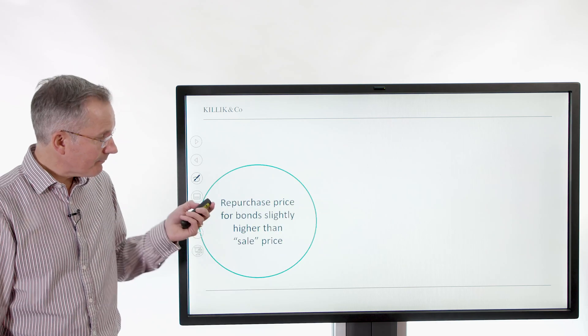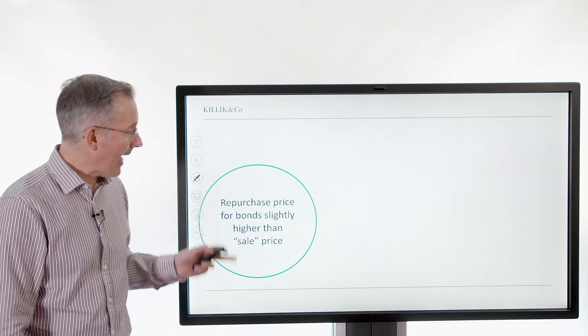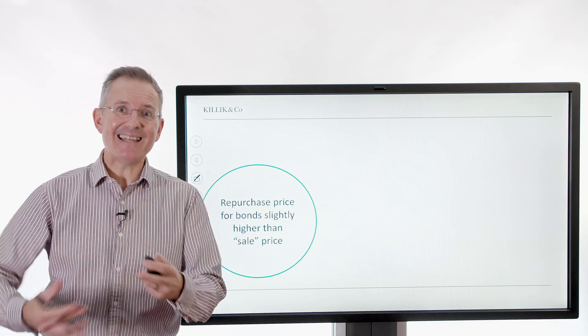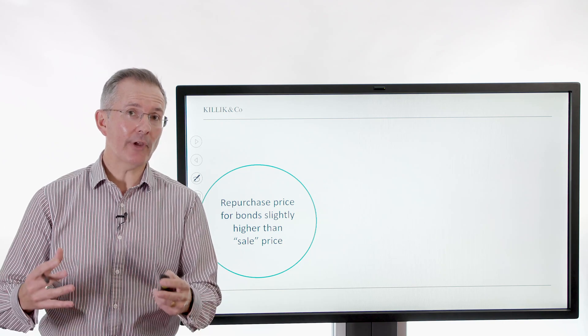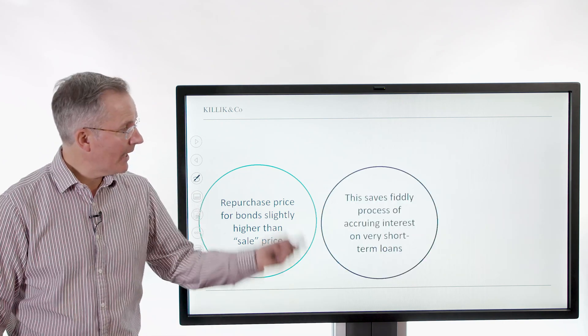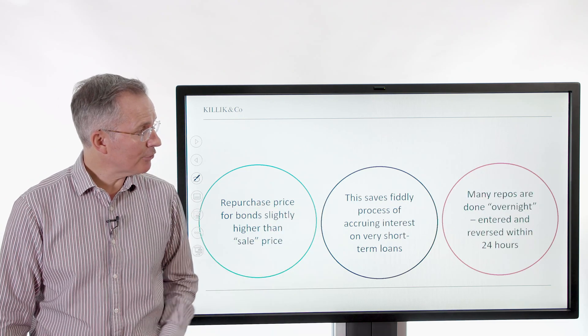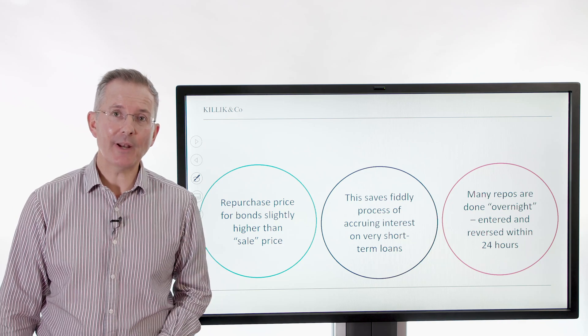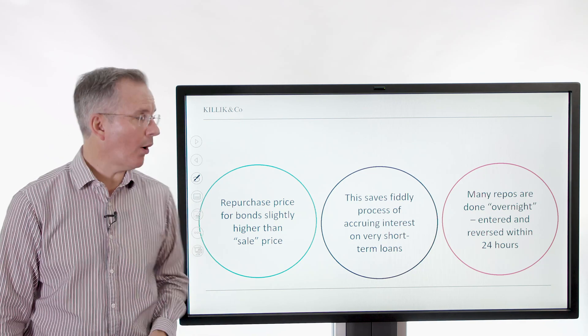Now the repurchase price of the bonds is usually slightly higher, as we've seen, than the sale price. So that basically just allows the two parties to factor in a little bit of interest using a simple mechanism. It saves the fiddly process of accruing interest on short-term loans. And many repos are short-term entered and reversed within 24 hours. So there's a very basic tour of repos.